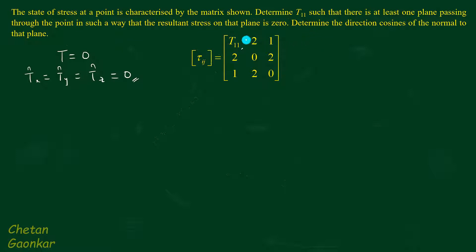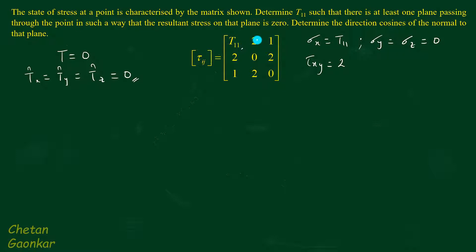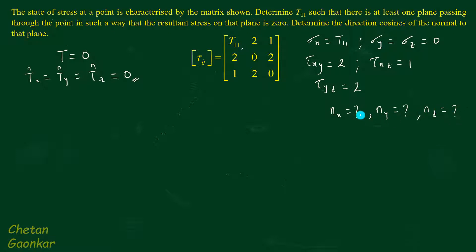First, let's write down all the given values. Sigma x is unknown, so I'll write it as t11. It is given that sigma y equals sigma z equals zero. Tau xy is given as 2, tau xz is given as 1, and tau yz is given as 2. We also need to determine the direction cosines nx, ny, and nz — sometimes written as l, m, n.